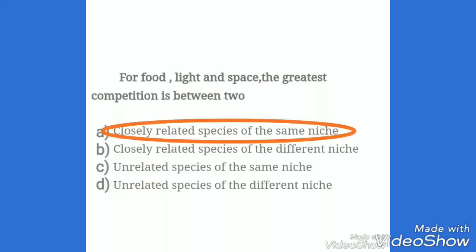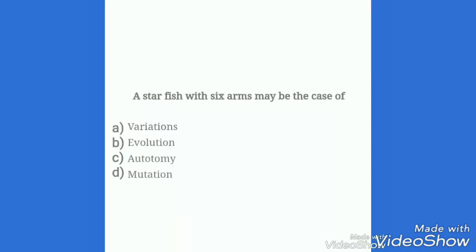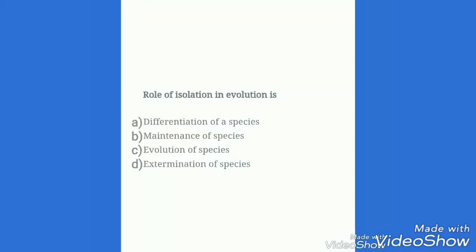Some organism resembles other organism and thus escapes from enemies, this phenomenon is known as mimicry. A starfish with six arms may be the case of the role of variations. The role of isolation in evolution is evolution of species.